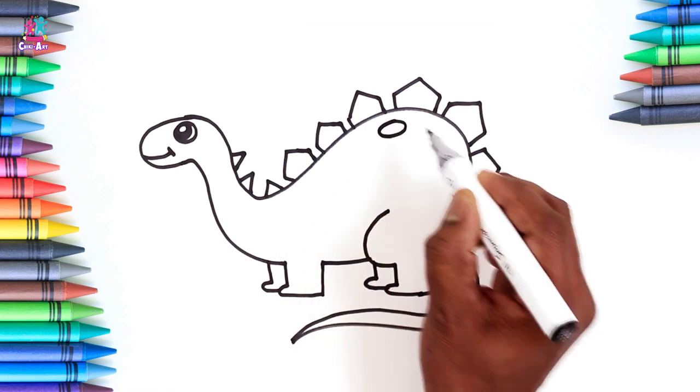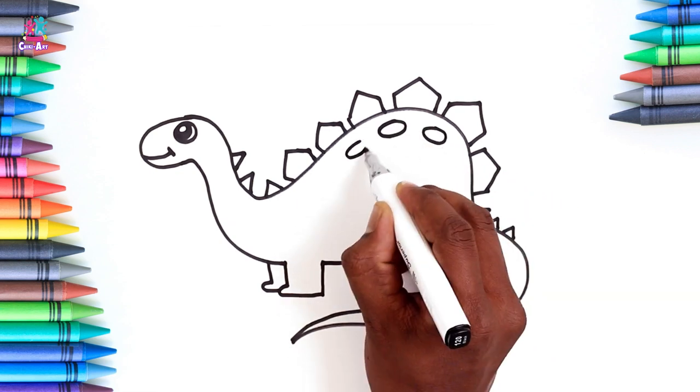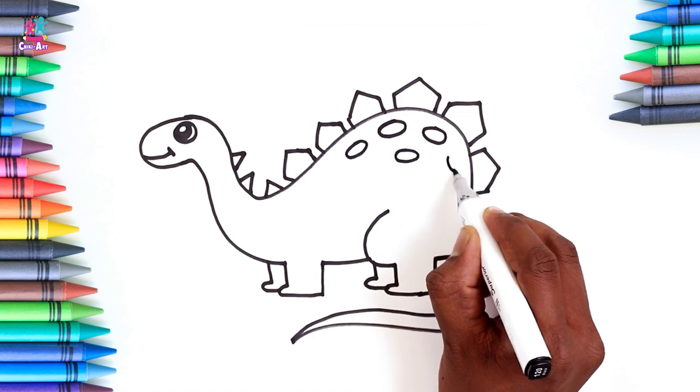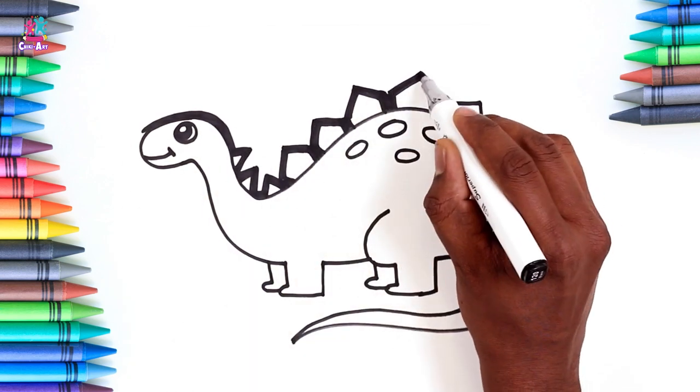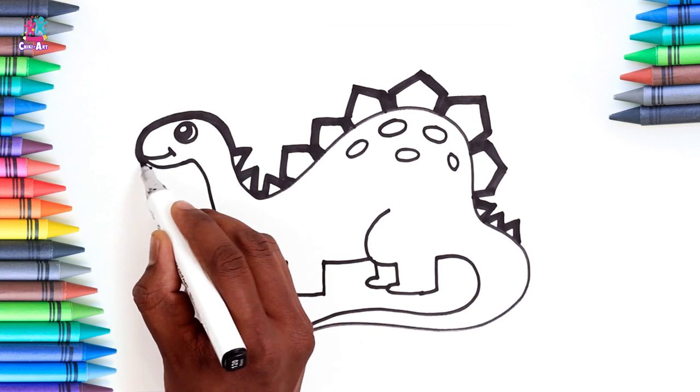And some spots which are kind of oval shaped. Thickening up the black border. We love it! It's going to look great when it's all colored in.